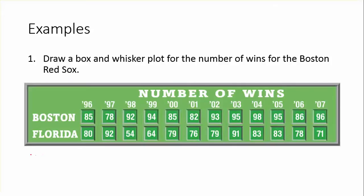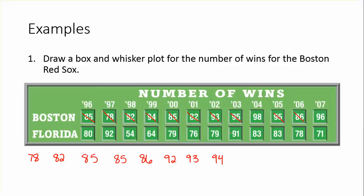Writing the values in order from least to greatest, we start with 78, then 82, two 85s, an 86, 92, 93, and 94.